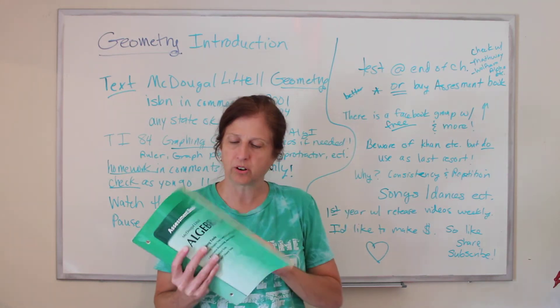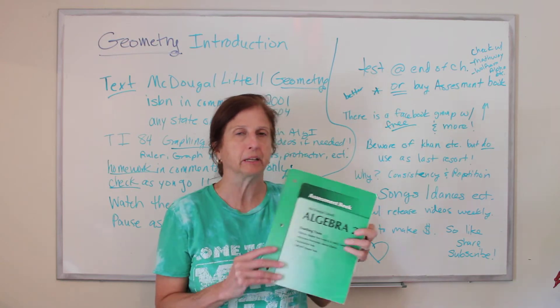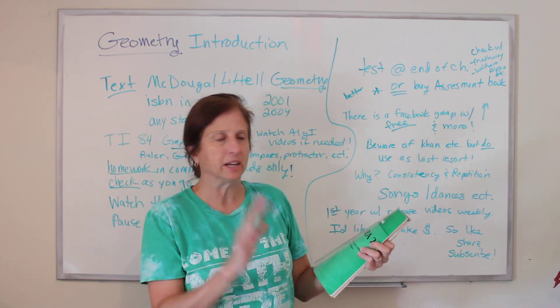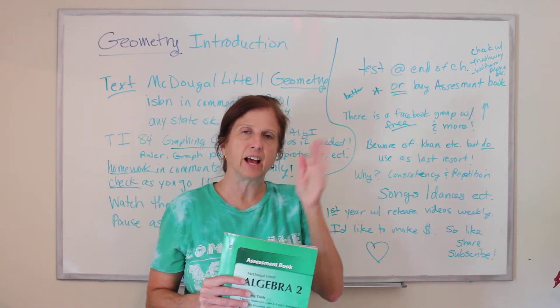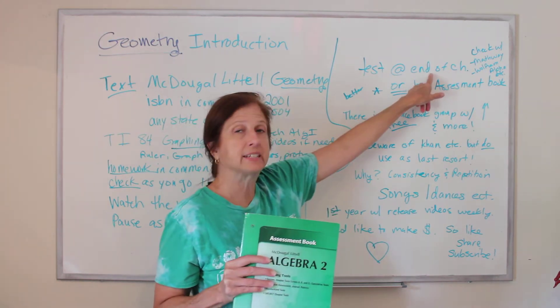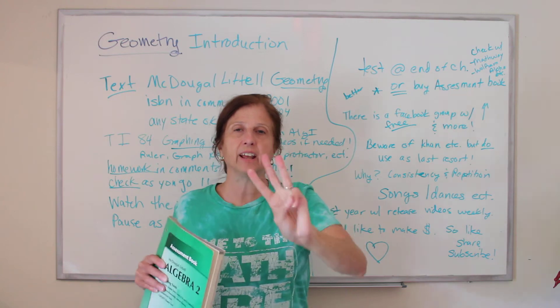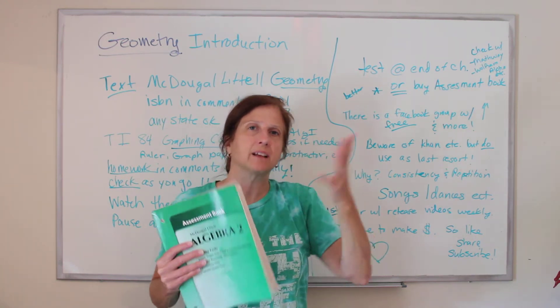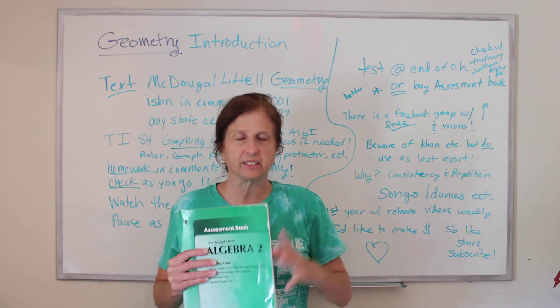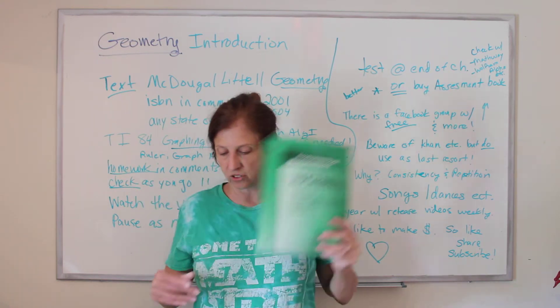The problem is I kept ordering them and they kept sending me the wrong edition, but the edition doesn't really matter so much. So the good thing about if you buy these tests is they're easier than the end of chapter tests and they even have three levels. They have A, B, and C. A is easy, B is average and C is advanced. So it's got all the answers. So that's pretty useful.